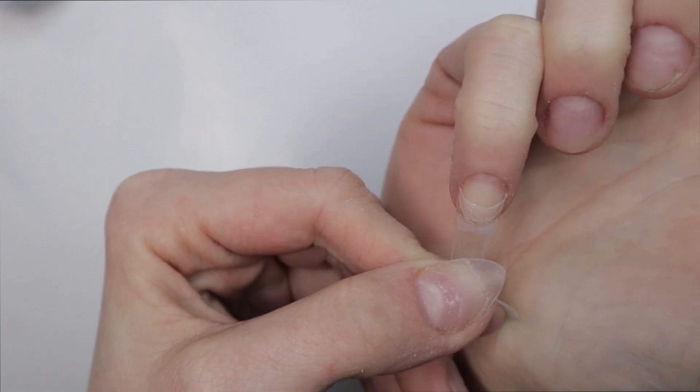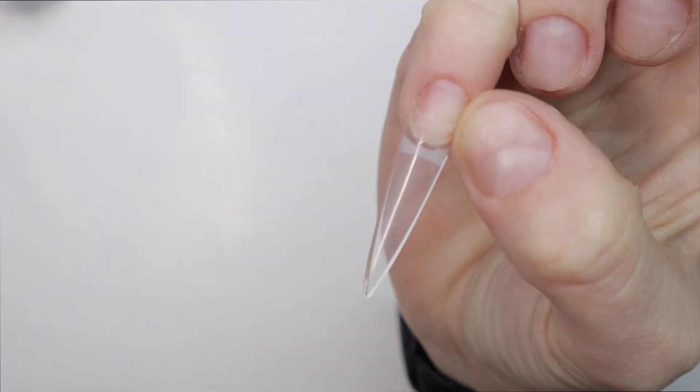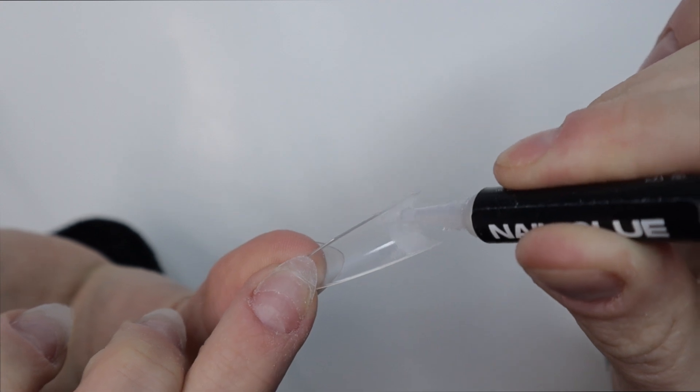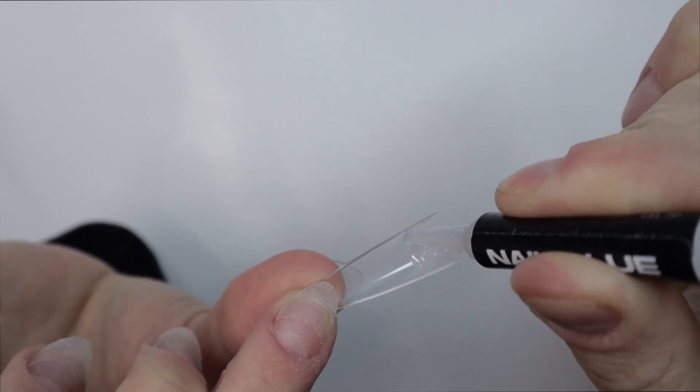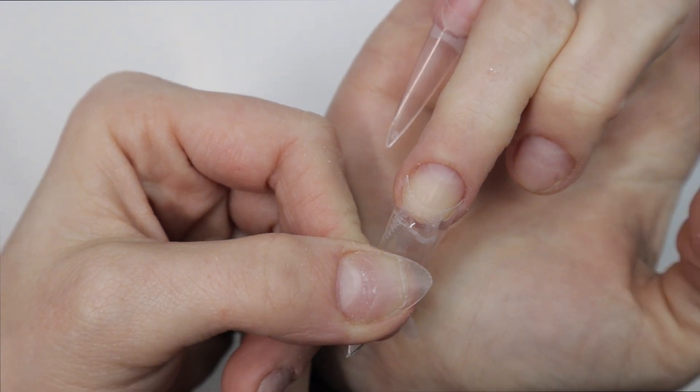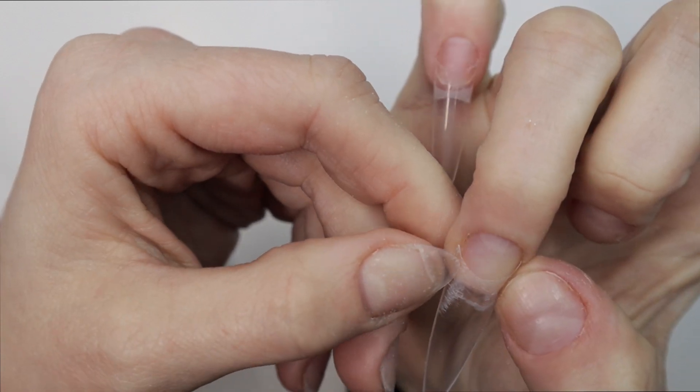Then I press it onto my nail, just going from a 45 degree angle from the edge of the tip to my free edge. Then I press down the sidewalls to make sure that nothing is sticking up. I repeat this process for all of the tips. I think it's very important to hold down the edges of the tip, especially if you have a more flimsy tip, so that you make sure it lays flat onto your natural nail.